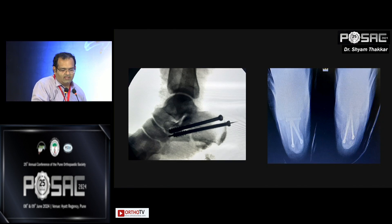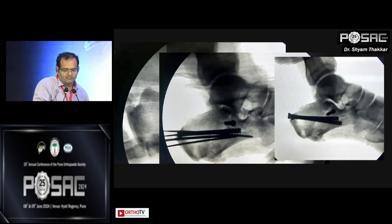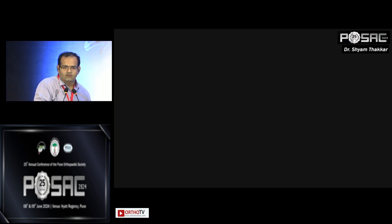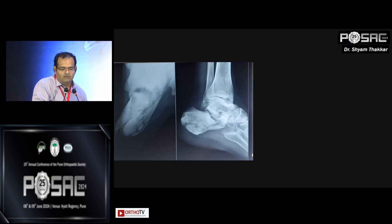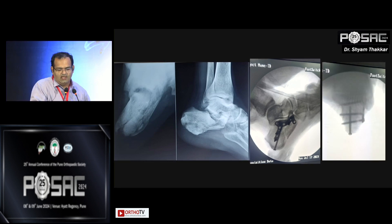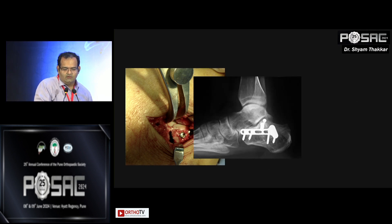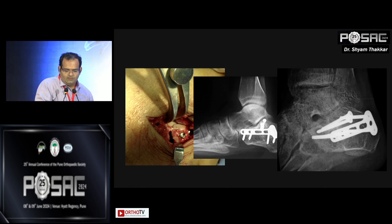Good alignment of the articular surface is confirmed along with Böhler's angle and heel alignment on axial X-rays. The contralateral side was easier to fix and was secured with screws. Implants can range from K-wires to percutaneous screws to buttress plates. Sinus tarsi-specific plates are now available and eliminate the need for a lateral extensile approach. It is important to assess heel alignment on axial X-rays and the medial column screw placement. With this approach, articular surface reduction is directly visible.